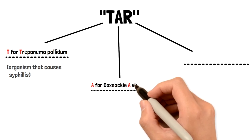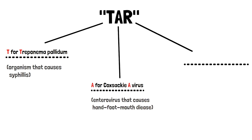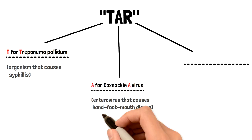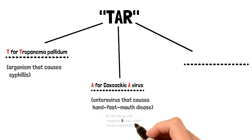The A is for Coxsackie A virus. This is an enterovirus that can cause a specific rash that happens on your mouth as well as your hands and feet, and this is called hand, foot, mouth disease. I also want to note that Coxsackie A virus causes this — not Coxsackie B virus. Coxsackie B virus is a common cause of myocarditis, so keep those two separate.